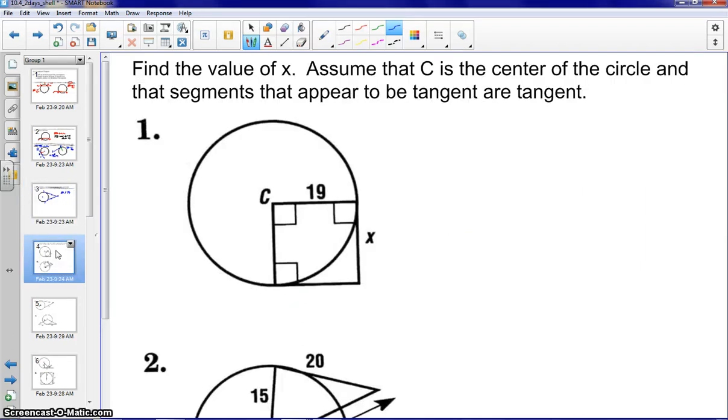Moving on to the examples here, let's read a couple things. Find the value of X for these six problems. We're assuming that C is the center, as well as any segments that appear to be tangent are tangent. So if they appear to be tangent, we are assuming they are tangent. In the first problem here, we have the radius is 19. And again, recall that we also have another radius here, that vertical segment, that would be also 19. So now that we have one pair of disjoint sides congruent and we have three right angles, we do know that this is a square. Therefore, X would be 19.